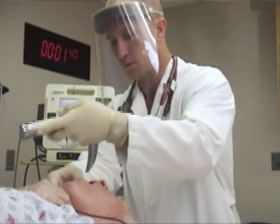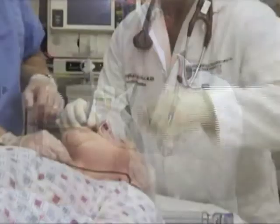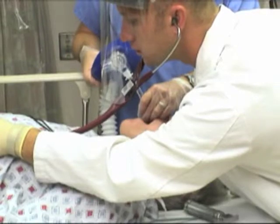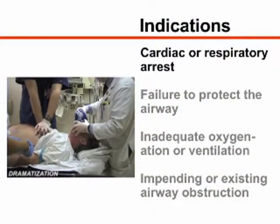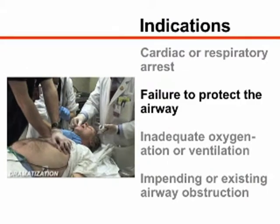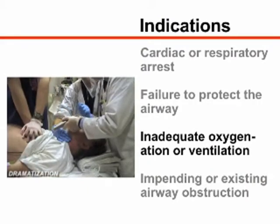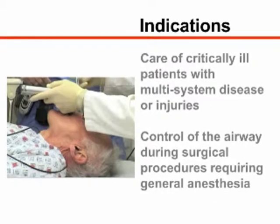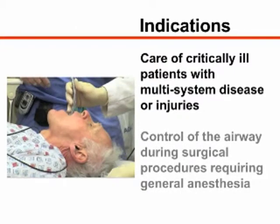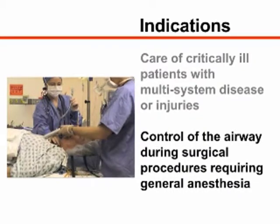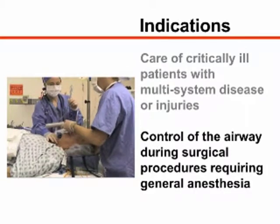Emergency orotracheal intubation is indicated in any situation in which definitive control of the airway is needed. Specific indications include cardiac or respiratory arrest, failure to protect the airway from aspiration, inadequate oxygenation or ventilation, and impending or existing airway obstruction. Orotracheal intubation is also commonly performed as part of the care of the critically ill patient with multi-system disease or injuries, and to facilitate control of the airway during surgical procedures requiring general anesthesia.